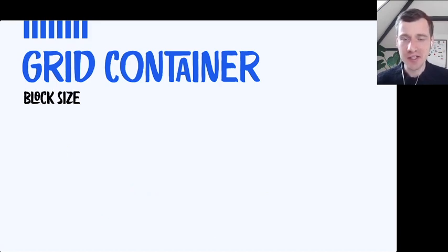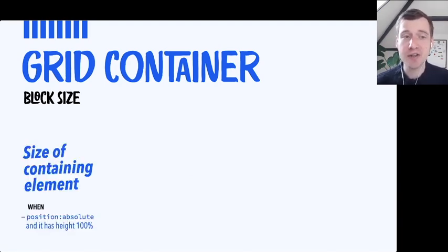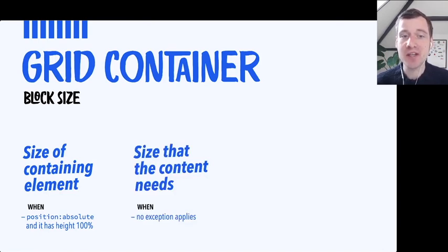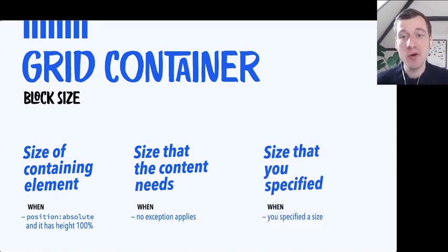In the block direction, it seems a bit more straightforward. You could have it become the size of the containing element — that's when you use position: absolute and a height of 100%. You could have it be the size the content needs, which is whenever none of the exceptions apply. Usually it will be the size the content needs, or it can be a size that you specified.